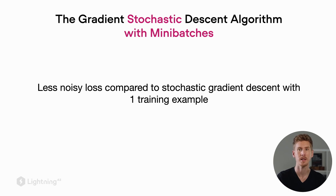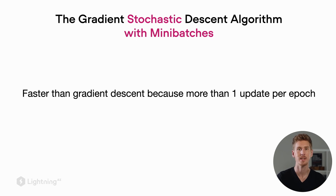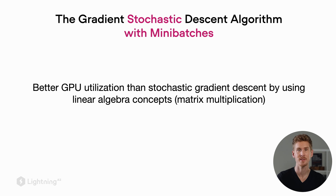To recap the advantages: mini-batch gradient descent produces less noisy updates than regular stochastic gradient descent, and it provides more updates per epoch than regular gradient descent, so the model learns much faster. Furthermore, mini-batch gradient descent results in much better GPU utilization and lets us take advantage of certain concepts of linear algebra.